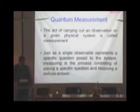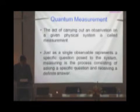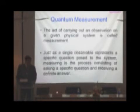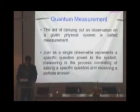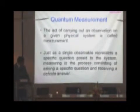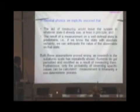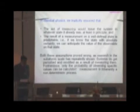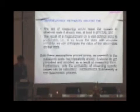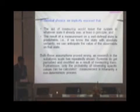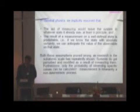Next we come to quantum measurements. The act of carrying out an observation on a given physical system is called measurement. Just as a single observable represents a specific question posed to the system, measuring is the process of asking a specific question and receiving a definite answer. In classical physics, we implicitly assume first that the act of measuring would leave the system in whatever state it already was, and second that the result of a measurement on a well-defined state is predictable — if we know the state with absolute certainty, we can anticipate the value of the observable.